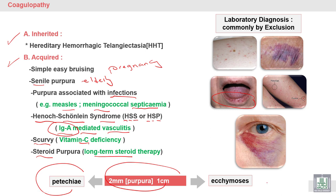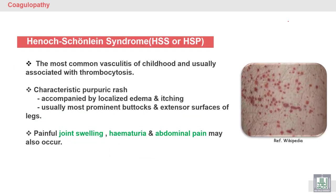We mentioned that we have petechiae as very small bleeding, moderate, and ecchymosis as large-size bleeding. Laboratory diagnosis of vascular purpura is commonly done by exclusion of other causes of purpura — platelet disorders or other causes of bleeding such as coagulation factor deficiency. Exclusion is very important to confirm that it is vascular purpura.